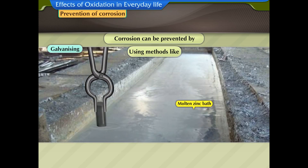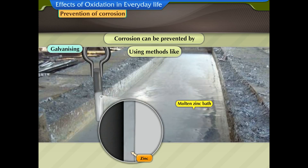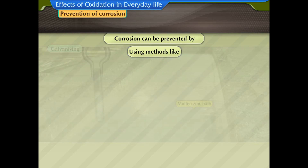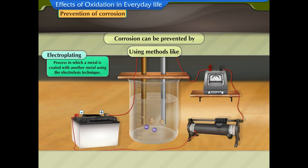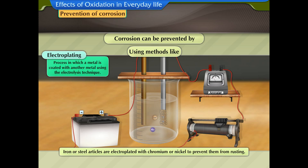Galvanizing is a process of coating zinc on iron or steel to prevent it from corrosion. Electroplating is a process in which a metal is coated with another metal using the electrolysis technique. Iron or steel articles are electroplated with chromium or nickel to prevent them from rusting.